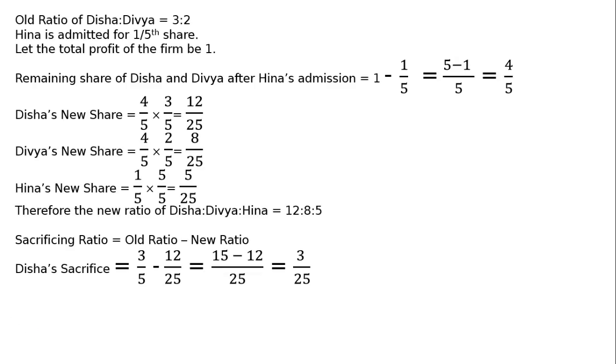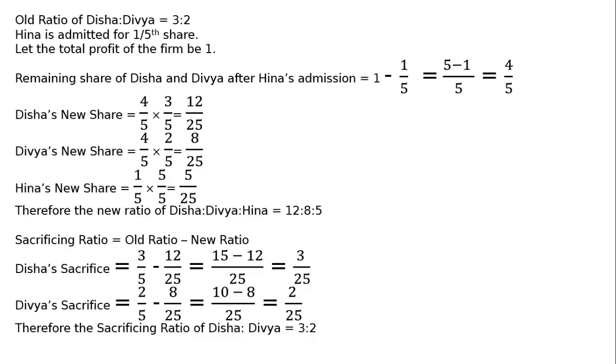In the same way, Dibya's sacrifice is 2 upon 5 minus 8 upon 25, that is 10 minus 8 equals 2 by 25. Therefore, the sacrificing ratio of Disha to Dibya is 3 is to 2.